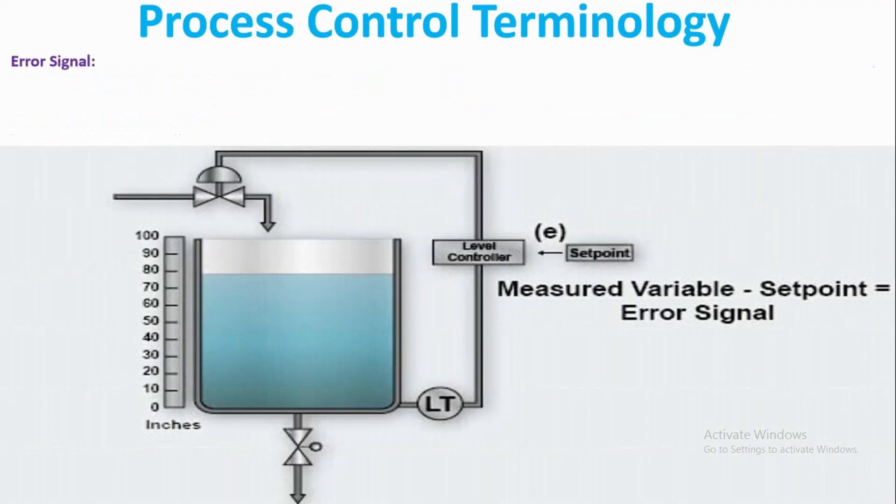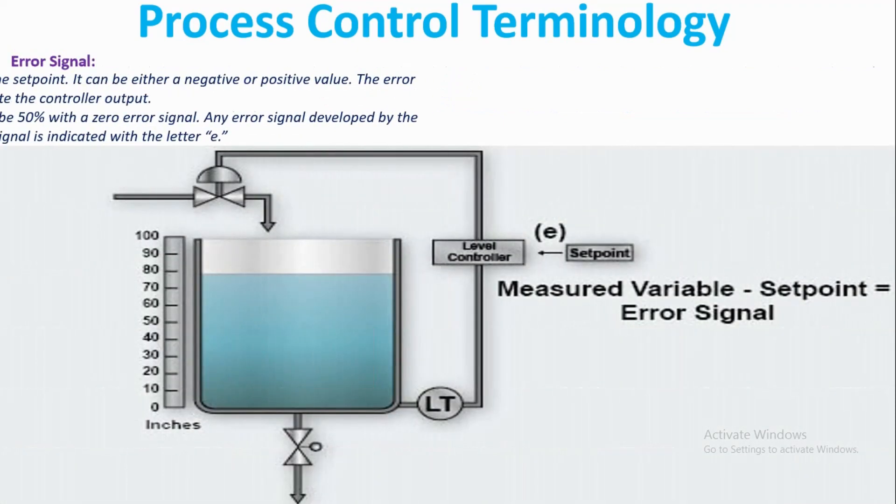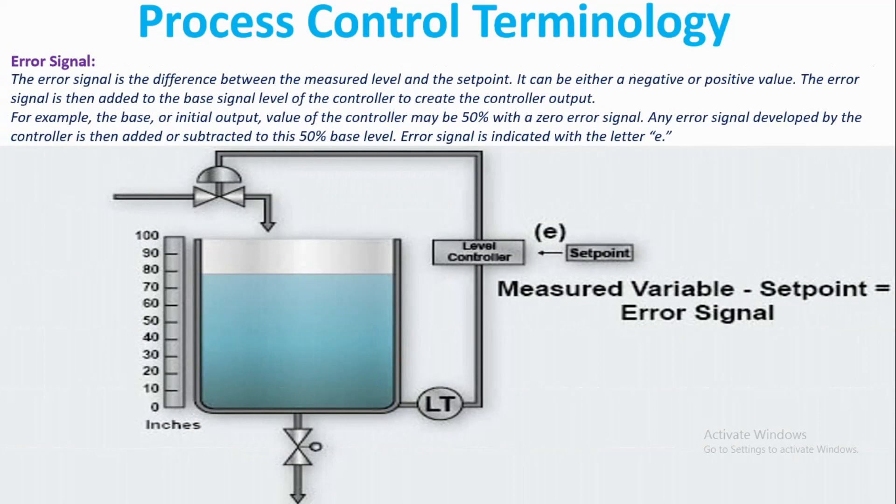Now we will see what error signal is. Error signal is the difference between the measured level and the set point. It can be either negative or positive. The error signal is then added to the base signal level of the controller to create the controller output.